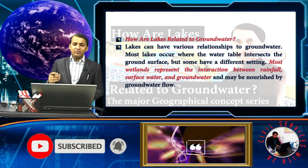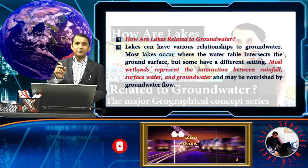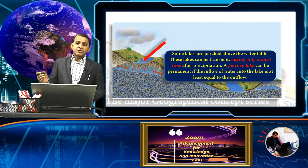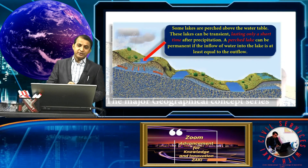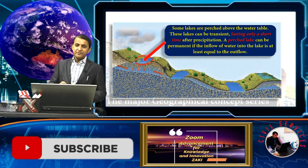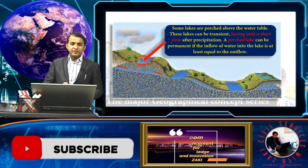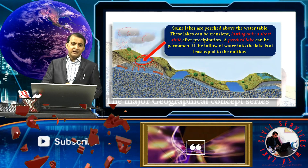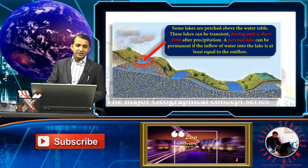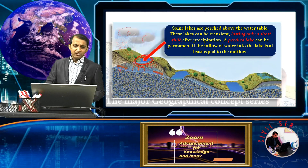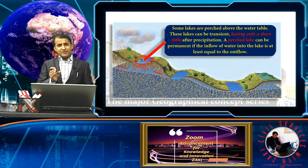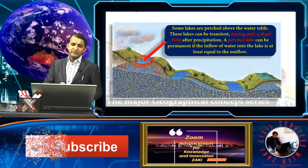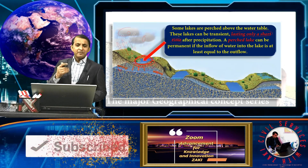Some lakes are perched above the water table and last only a short period of time. When precipitation occurs, some water accumulates and eventually seeps deep into the groundwater. This type of lake only lasts a short period after precipitation.